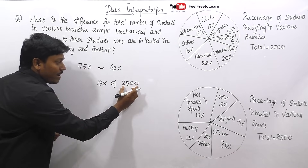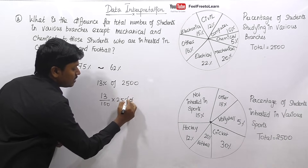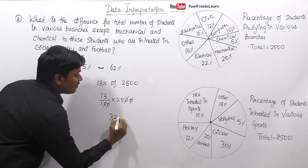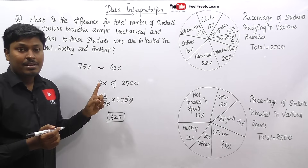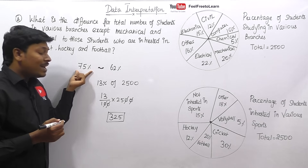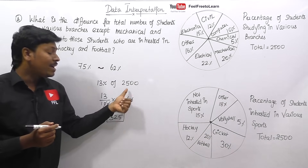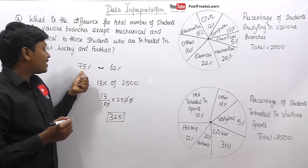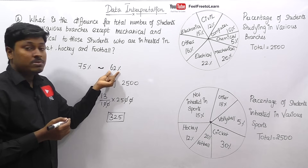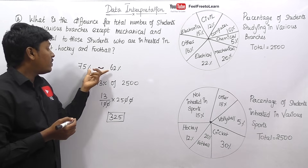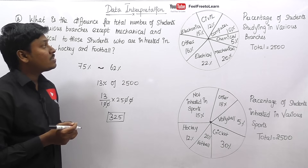Now find 13% of 2500: 13 ÷ 100 × 2500, cancelling zeros gives 25 × 13 = 325. So 325 students is the difference for this question. The key tip: don't calculate each percentage's student count separately for both charts — since both totals are 2500, find the percentage difference first (13%), then multiply once by 2500 to save time.